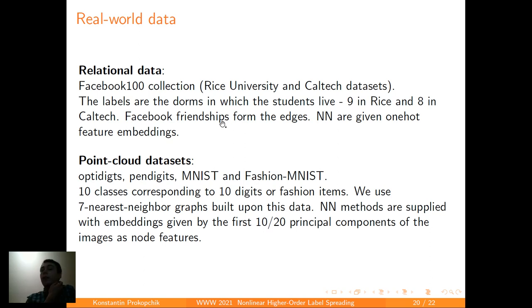And we also tested the algorithms on multiple point cloud data sets. We present here only four of them. OptDigits, PenDigits, MNIST and Fashion MNIST. The first three consists of 10 classes that correspond to handwritten digits from 0 to 9. And the last one consists of 10 classes that correspond to 10 fashion clothing items. All of these data sets are pictures. For our algorithm, we use 10 nearest neighbor graphs that is built upon this data. And NN methods are supplied with embeddings given by the first 10 for OptDigits and PenDigits and 20 for MNIST and Fashion MNIST principal components of the raw images as known features.